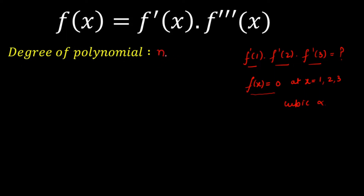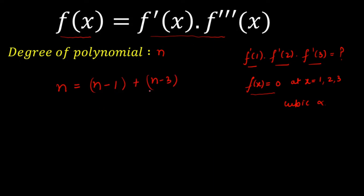Let the degree of polynomial f(x) be n. On the left-hand side, f(x) has degree n. On the right-hand side, f'(x) has degree n−1, since differentiating once reduces the degree by 1. Similarly, f'''(x) has degree n−3. When multiplied, the degrees add, so the RHS has degree (n−1) + (n−3) = 2n−4. Now I will calculate the degree by comparing LHS and RHS.